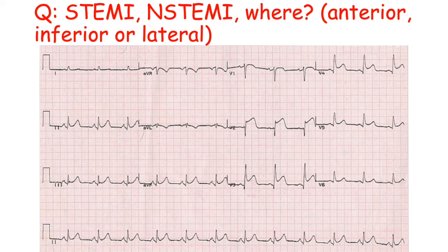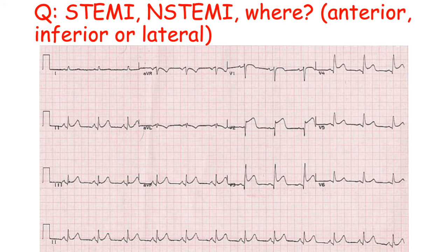This shows an anterior STEMI — an ST segment elevation myocardial infarction in the anterior portion of the heart. Looking at leads V2, V3, and V4, we have a clear ST segment elevation. The QRS complex doesn't return back to the baseline, so the ST segment is well elevated, especially on V2, and also on V4 and to a slight degree on V5. That is the anterior aspect of the heart, and the artery most likely affected is the left anterior descending.